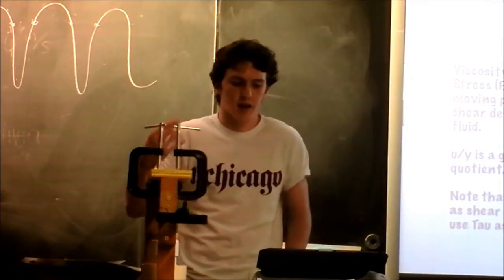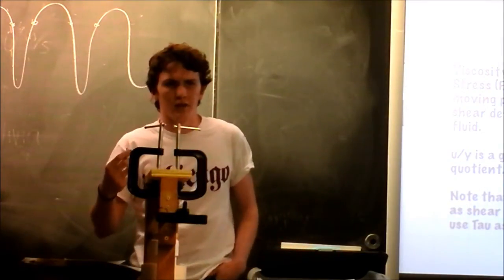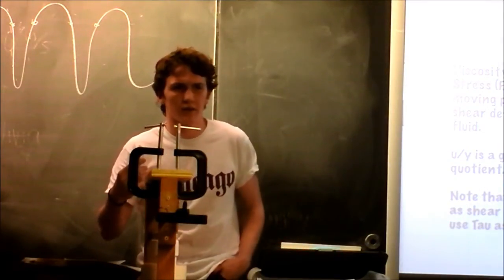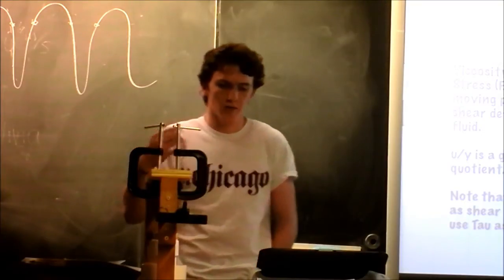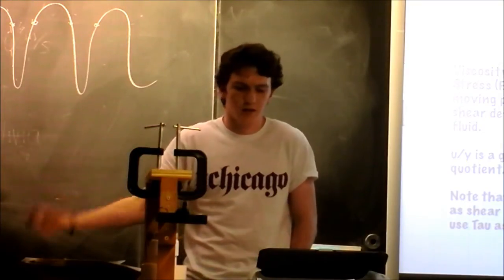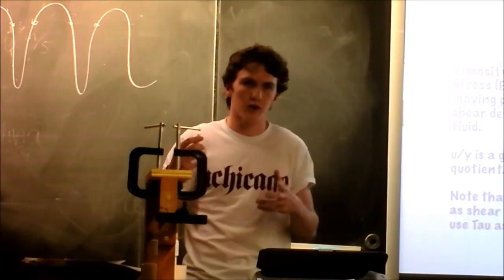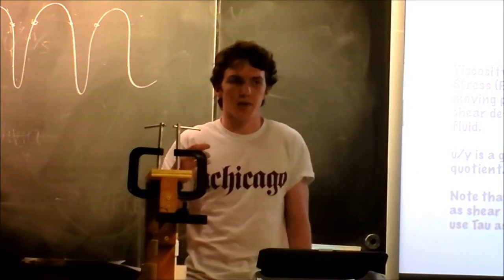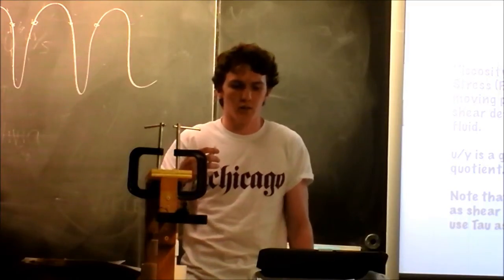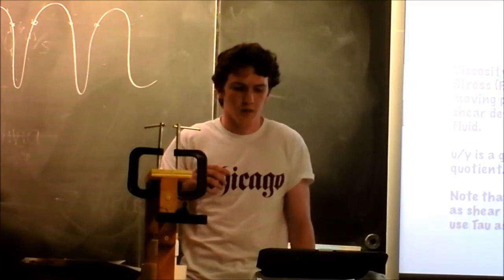And f equals mu times a times this gradient, the speed over the y dimension. And that's kind of like a derivative, but not really. It's a little bit different. It's a ratio, and yeah, you can't treat it like I couldn't just multiply by y and get y on the other side. That would have made the math a little bit easier, but yeah.